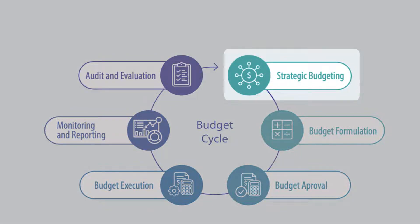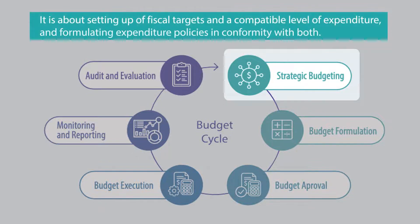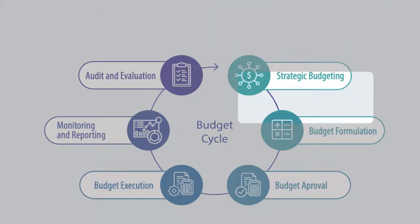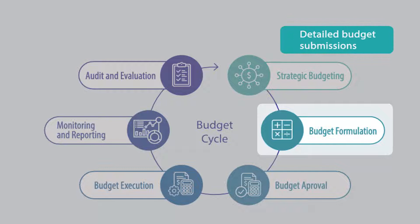During the strategic budgeting phase, resource allocation is considered from the viewpoint of the national policy objectives that the budget is expected to help achieve. It is about setting up fiscal targets and a compatible level of expenditure, and formulating expenditure policies in conformity with both. Budget formulation involves preparing detailed budget submissions, often first by Line Ministries to the Ministry of Finance, which then finalizes the integrated budget proposal.